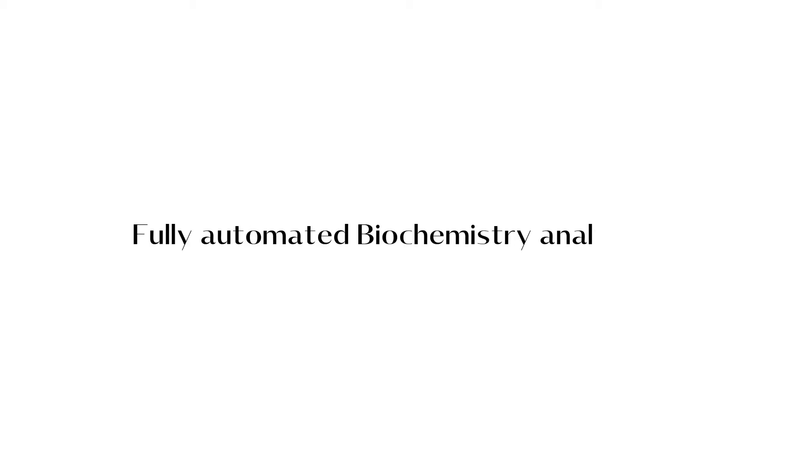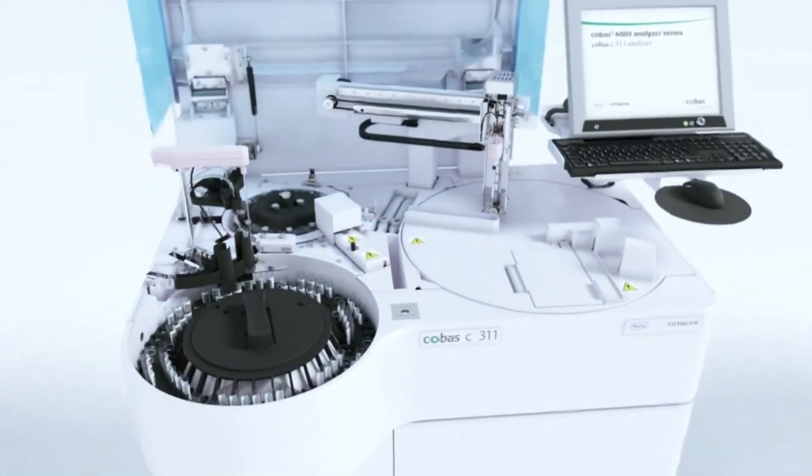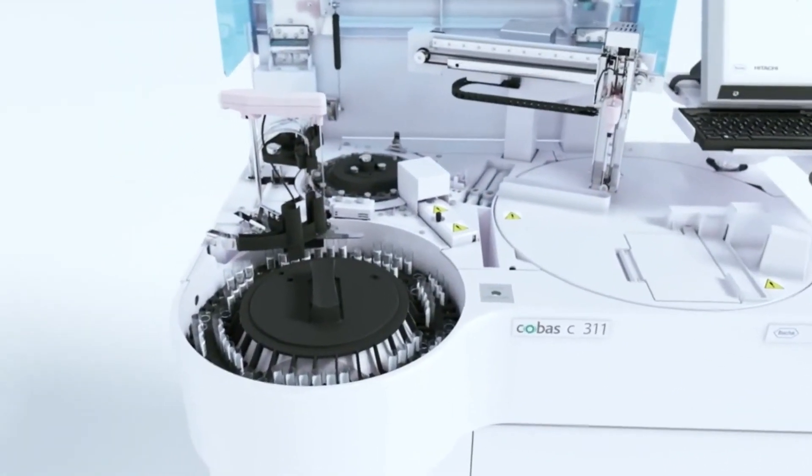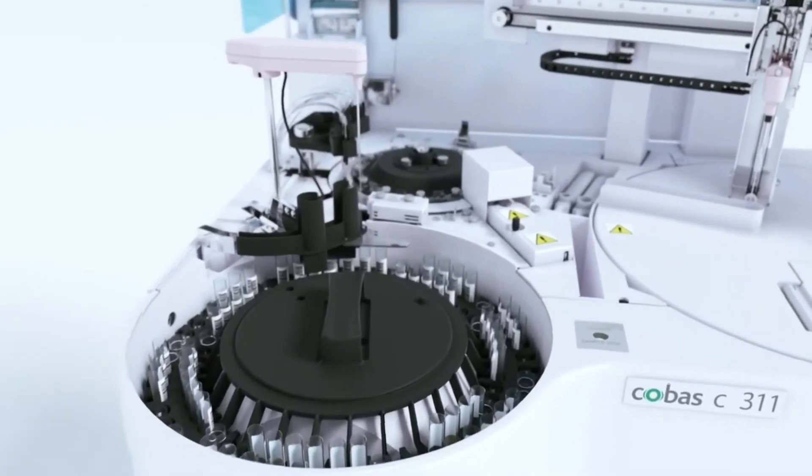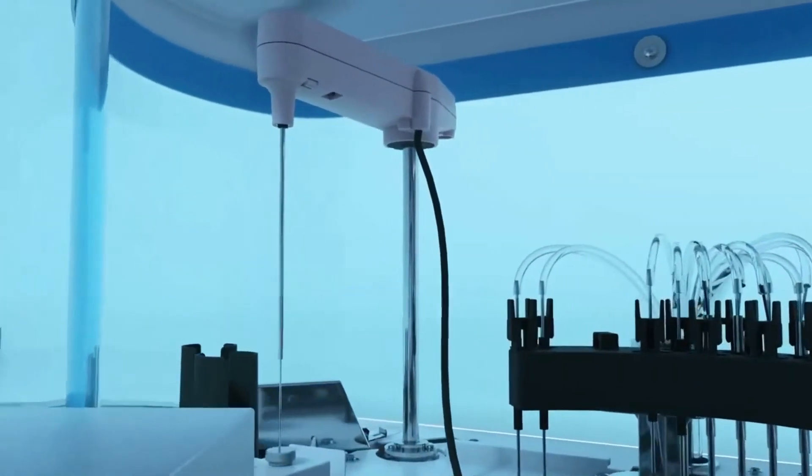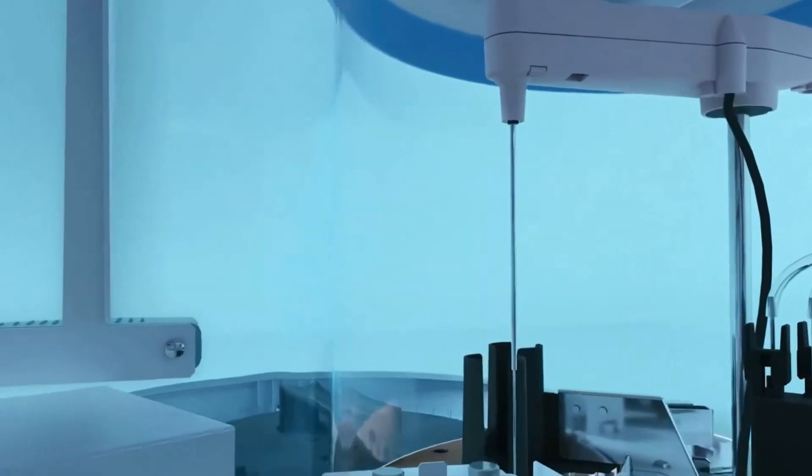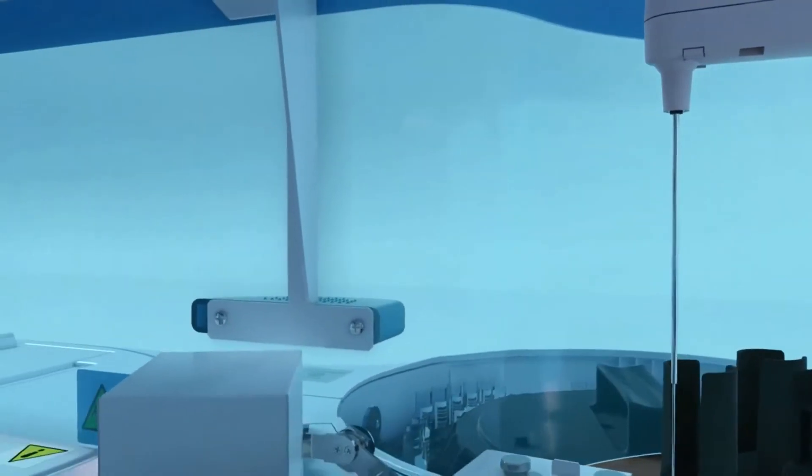The second type of biochemistry analyzer is the fully-automated biochemistry analyzer. Fully-automated biochemistry analyzers measure the concentration of certain proteins, enzymes, electrolytes, metabolites, or even drugs in the provided samples of urine, blood, serum, plasma, or other bodily fluids.